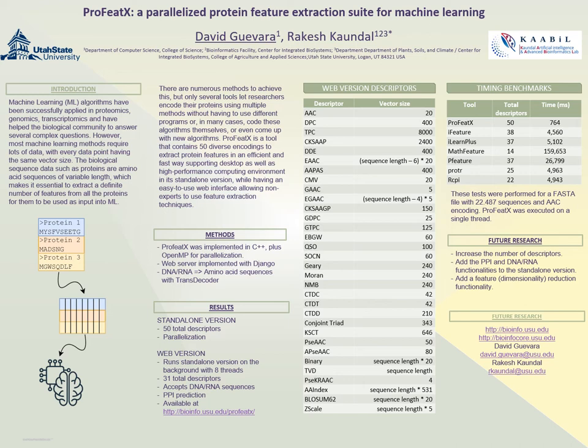In the future, we may add more methods, and bring the protein-protein interaction and DNA or RNA encoding functionalities into the standalone version. We also plan to add dimensionality reduction using PCA or other suitable algorithms. We need to evaluate which algorithms are feasible to implement in C++, since, for example, autoencoder-based methods could be difficult to add — unlike in Python, C++ may lack the necessary libraries.